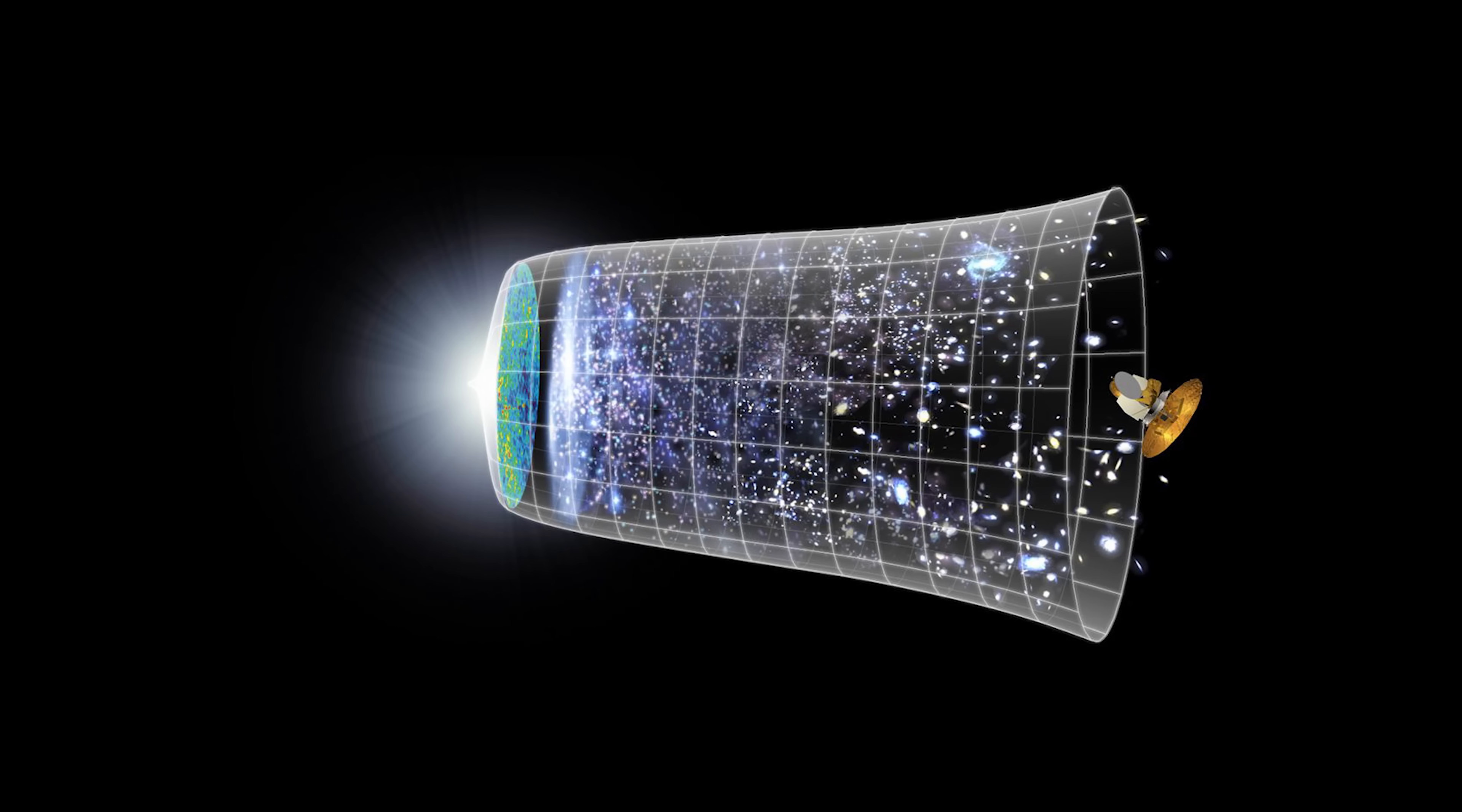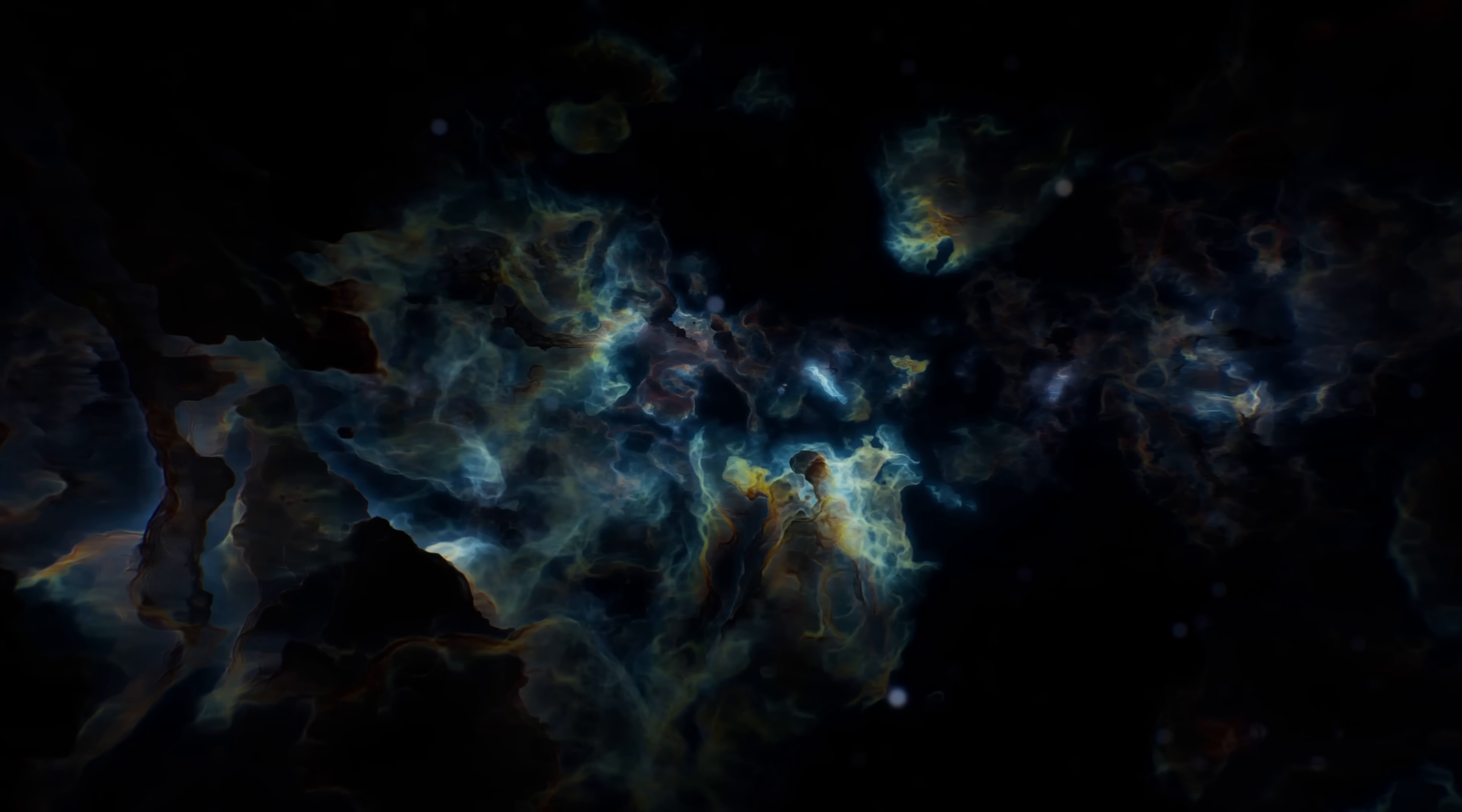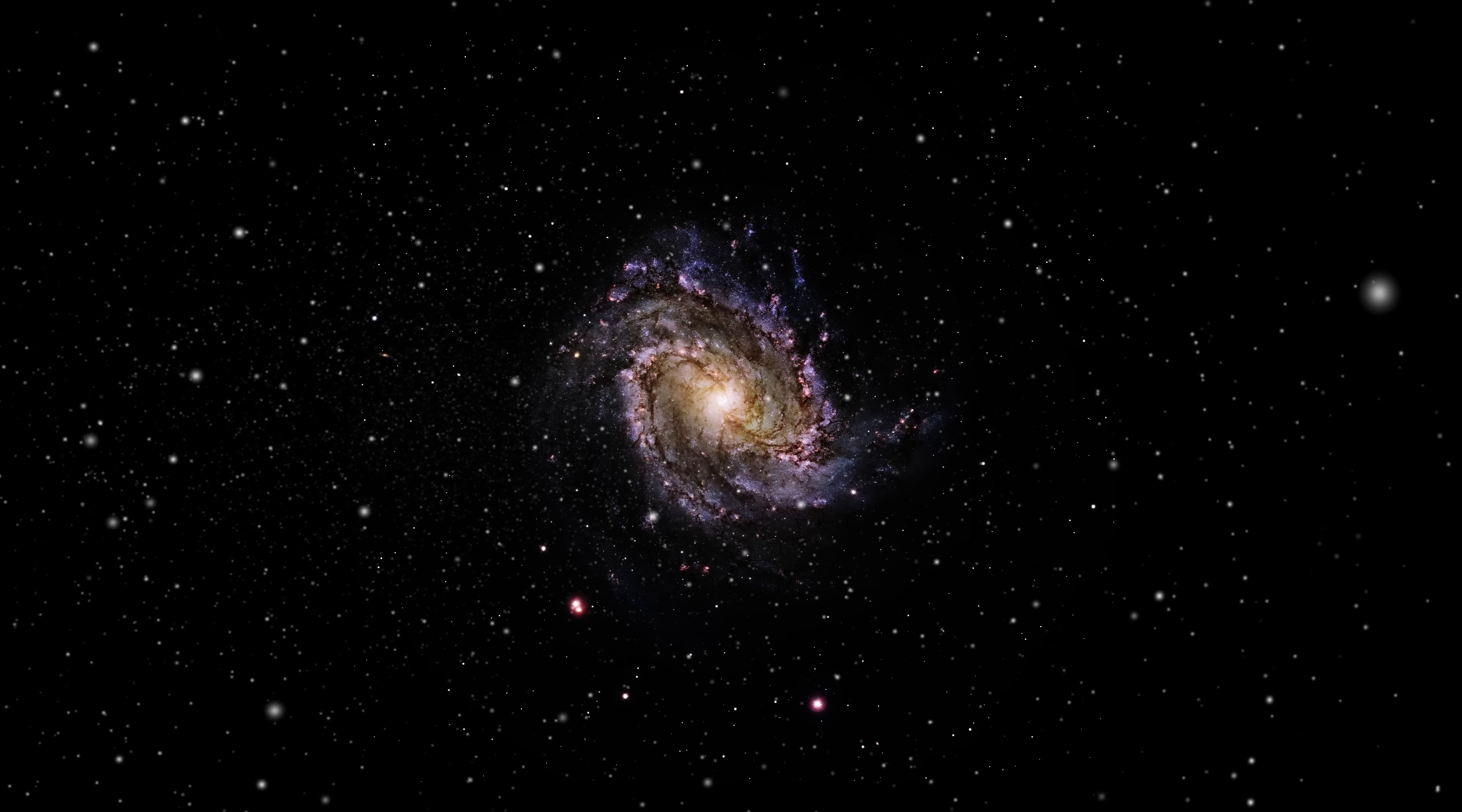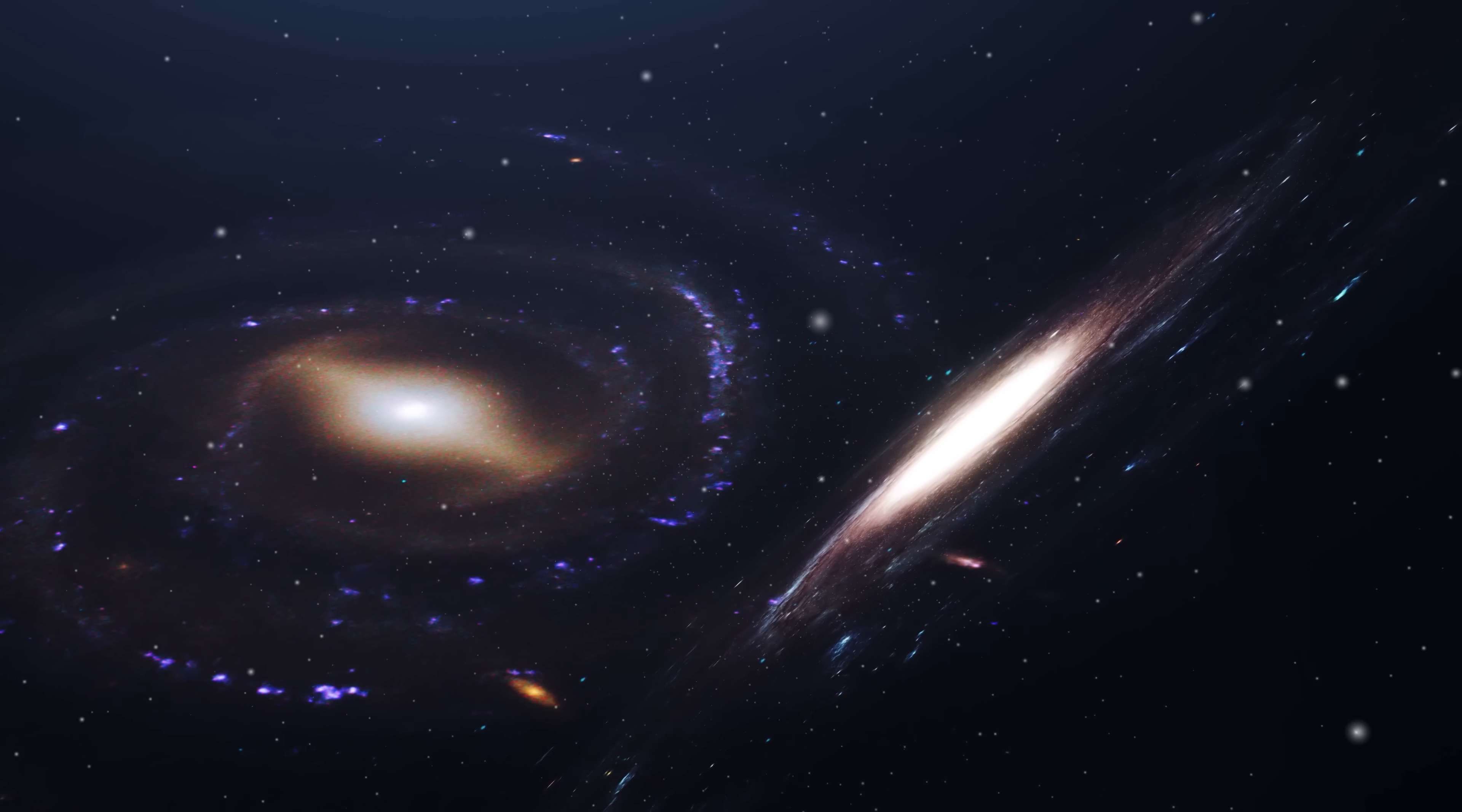Three competing theories have emerged to explain these impossible galaxies. The Big Bang happened much earlier than we thought, giving the universe more time to develop these structures. Dark matter, the invisible glue holding galaxies together, behaved completely differently in the early universe. Our fundamental understanding of how stars and galaxies form is fundamentally flawed.